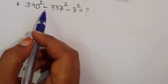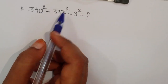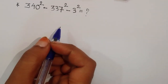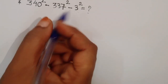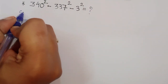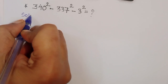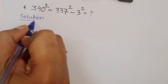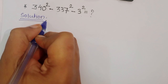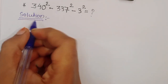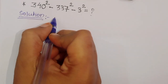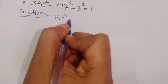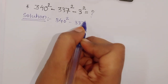The question is: 340 square minus 337 square minus 3 square is equal to what? Let's see the solution. The given question is 340 square minus 337 square minus 3 square.